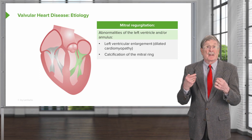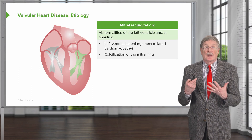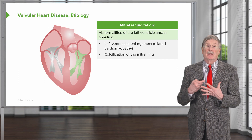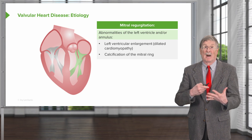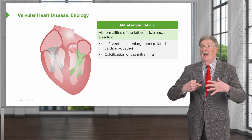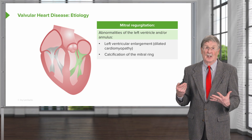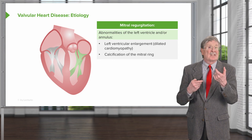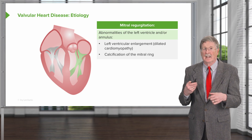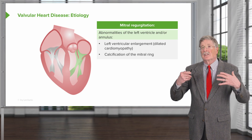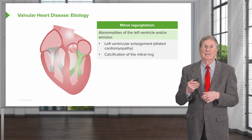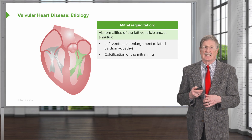Left ventricular or annular changes can also be causes of mitral insufficiency — so a dilated left ventricle or calcification of the mitral ring, which will change the geometry of the mitral apparatus.